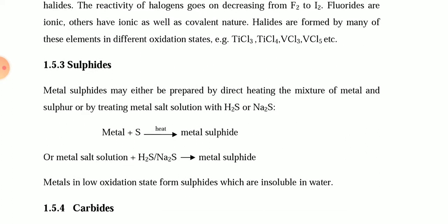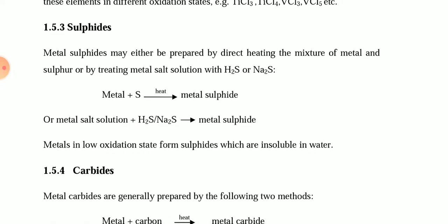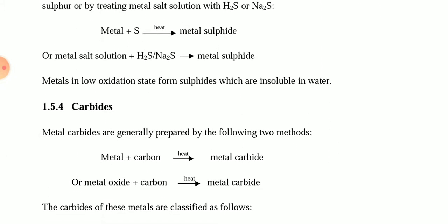Metal sulfides may be prepared either by direct heating of a mixture of the metal and sulfur, or by treating a metal salt solution with H₂S or sodium sulfide (Na₂S). The reaction of metal and sulfur heated under certain conditions gives the metal sulfide. Alternatively, a metal salt solution treated with H₂S or Na₂S also gives the metal sulfide. Metals in a low oxidation state form sulfides that are insoluble in water.